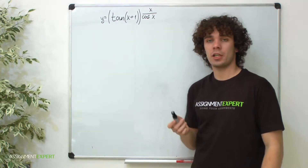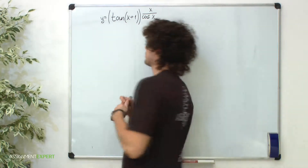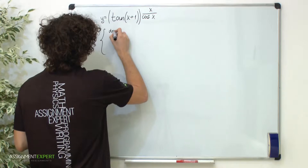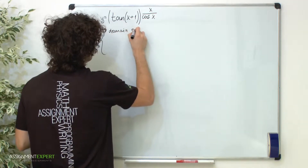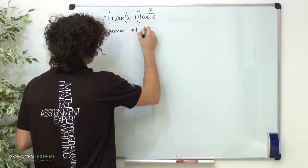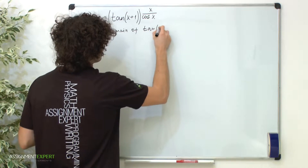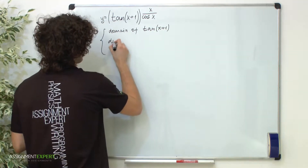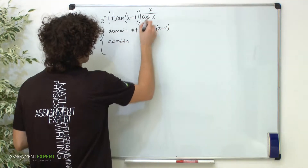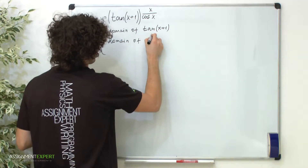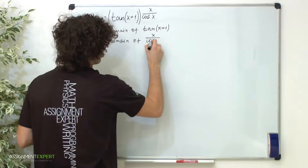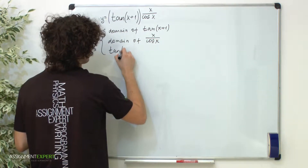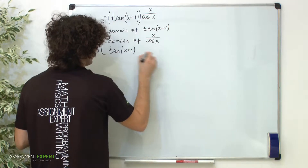To find it we need to consider a system with three conditions. The first condition is the domain of tangent of x plus 1. The second condition is the domain of x over cosine of x. And the last condition is tangent of x plus 1 is greater than 0.